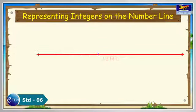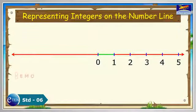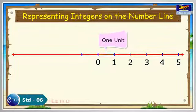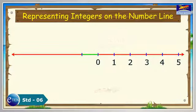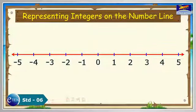Extend the number line to the left of zero. Take distance between zero and one as one unit. Mark a point on left of zero and label it as minus one. Mark another point at the distance of one unit left of minus one. Label it as minus two. Continue in this manner and mark points minus three, minus four, minus five and so on. This is how integers are represented on the number line.